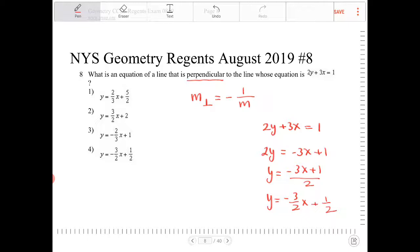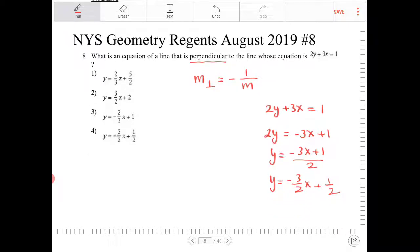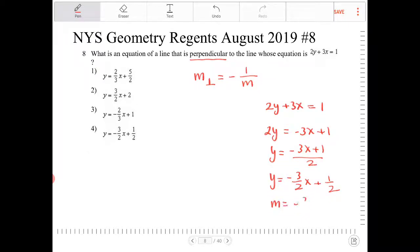And here I can see that the slope is negative 3 halves. So m is equal to negative 3 halves.